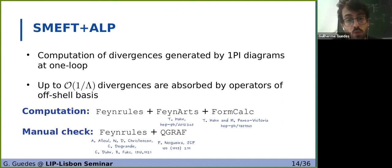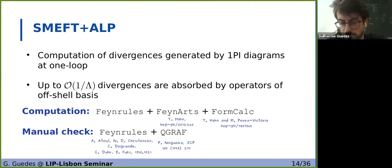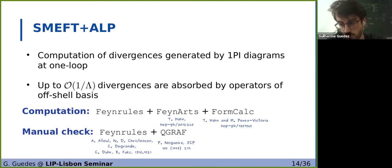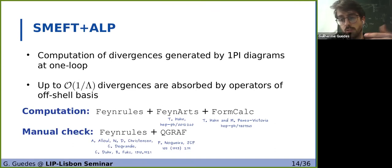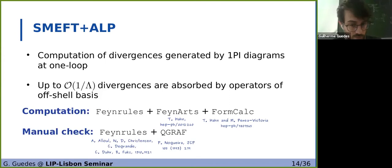We need to calculate the divergences generated at one loop. We will be concerned with divergences which come from the insertion of one effective operator, so we're going up to order one over lambda, where lambda is the high energy scale. These divergences will be absorbed by both the redundant and non-redundant operators, and we'll turn the redundant ones into the non-redundant through equations of motion. To perform this calculation, we used a plethora of software: FeynRules to write the model and get the Feynman rules, FeynArts to generate the diagrams, and FormCalc which automatically calculates the divergent part. We also did a manual check using FeynCalc and QGRAF, which drew the diagrams we needed to manually calculate.